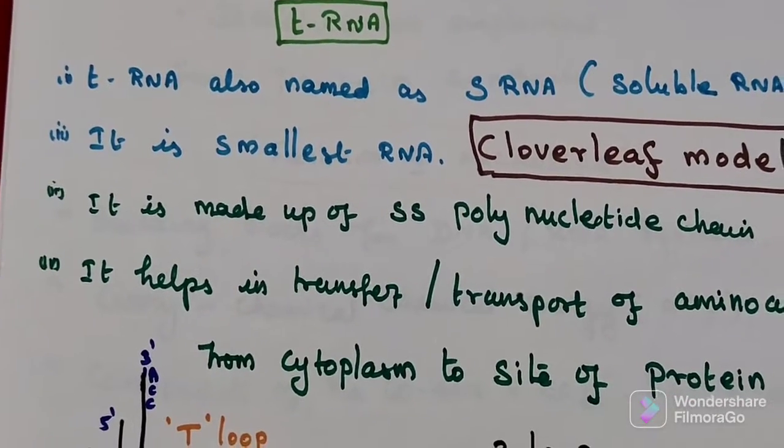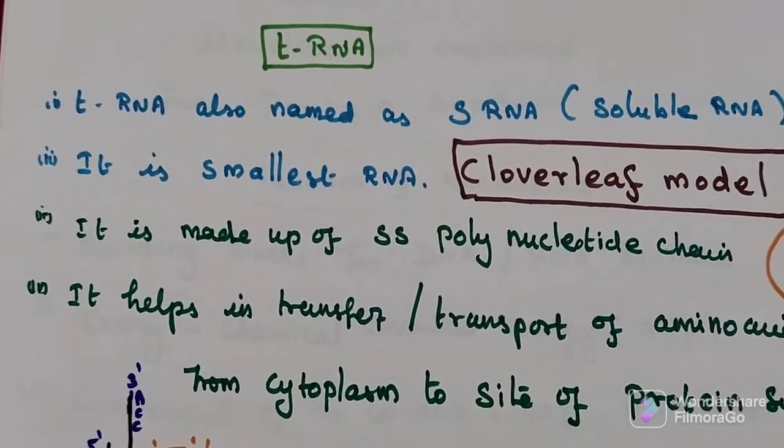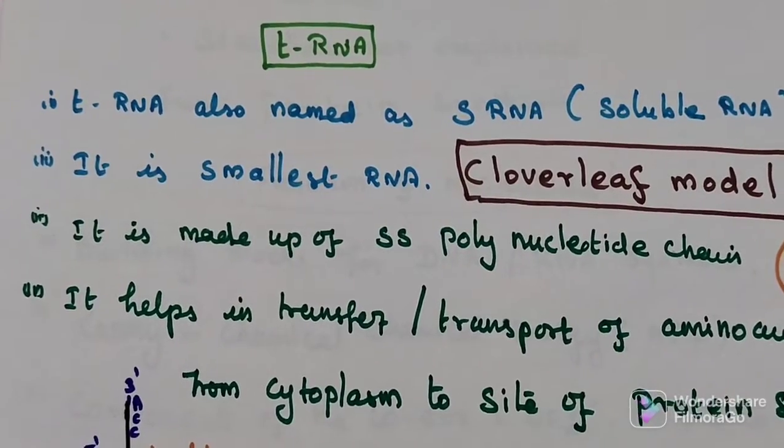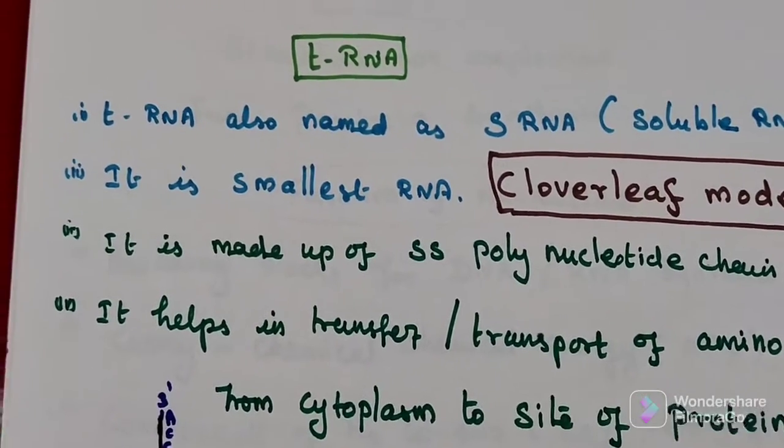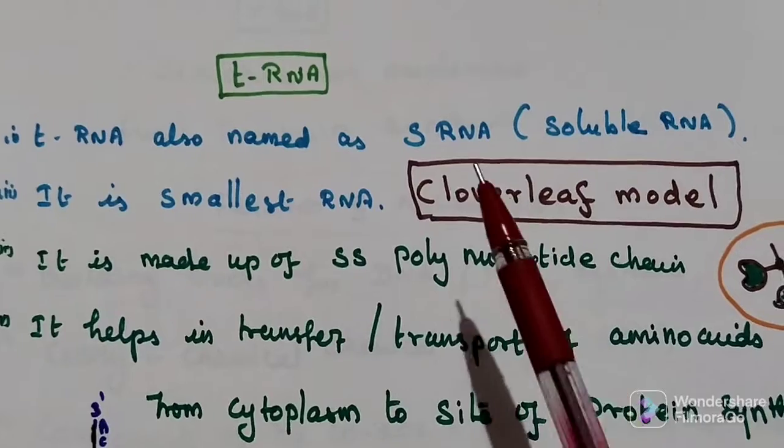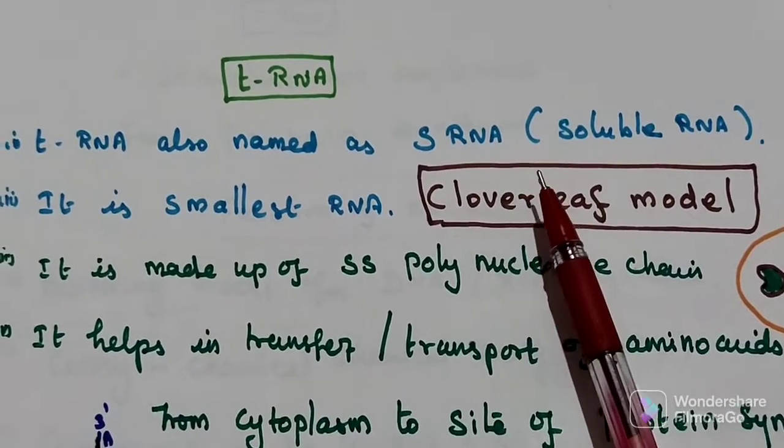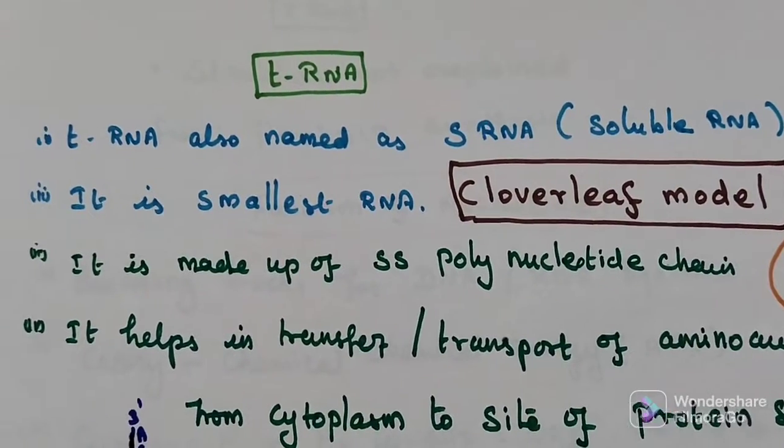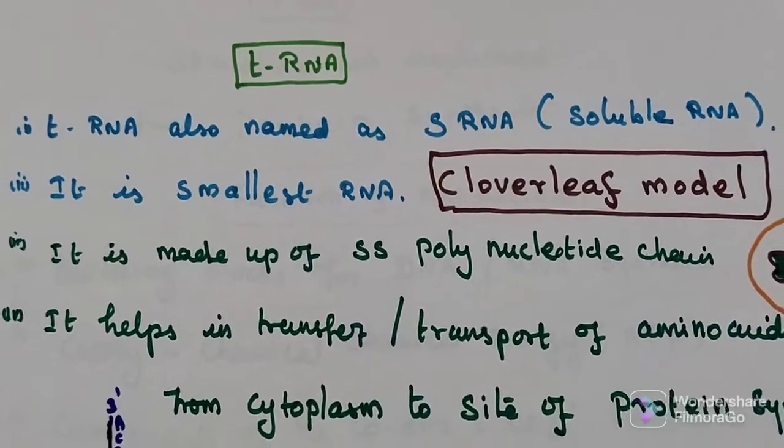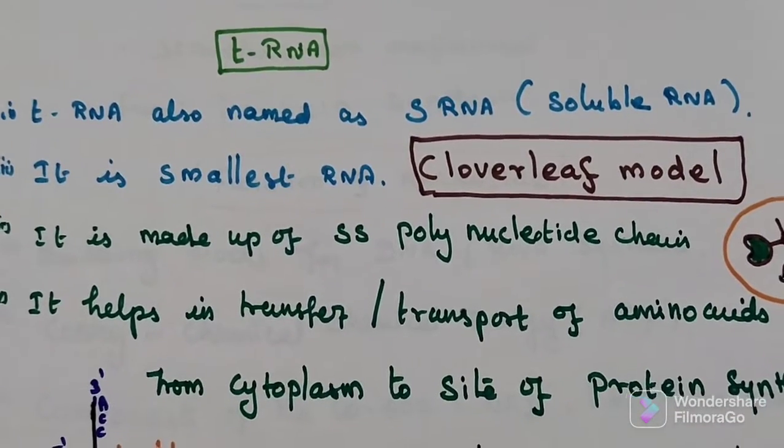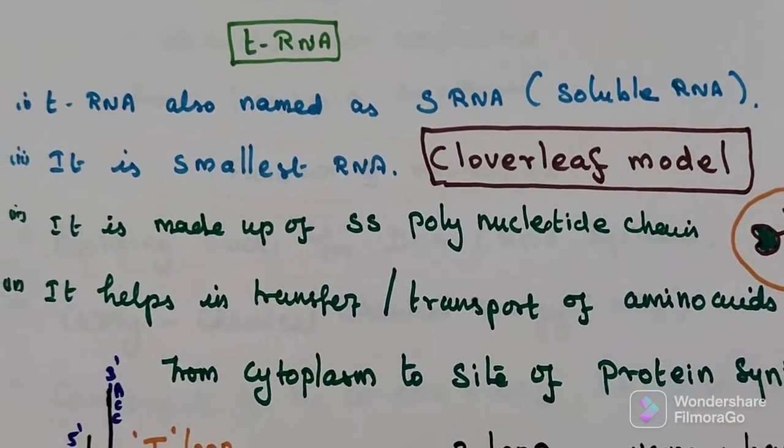In this video, we want to look at one more question: tRNA, transfer RNA. It's also called sRNA, that means soluble RNA. It is the smallest RNA compared to others, the smallest one.